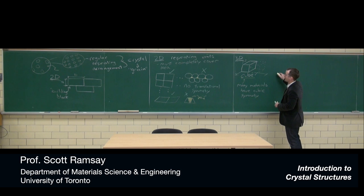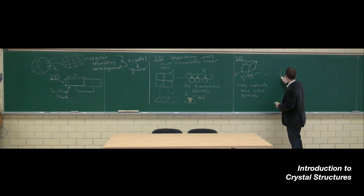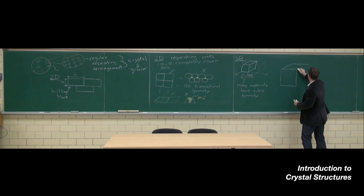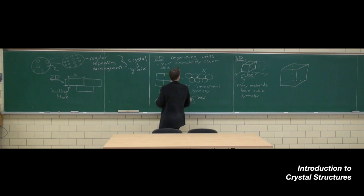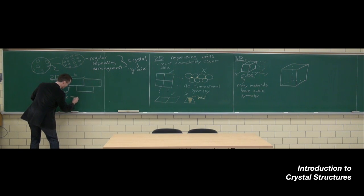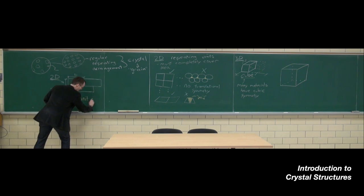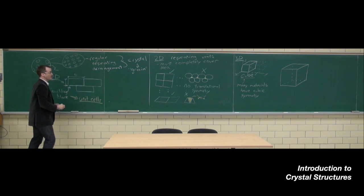So if we then say our building block is going to be a cube, there's a few things that we should describe or be able to describe about the building block. First of all, these repeating units or building blocks, we have another name for them. Instead of calling them building blocks, we call them unit cells.